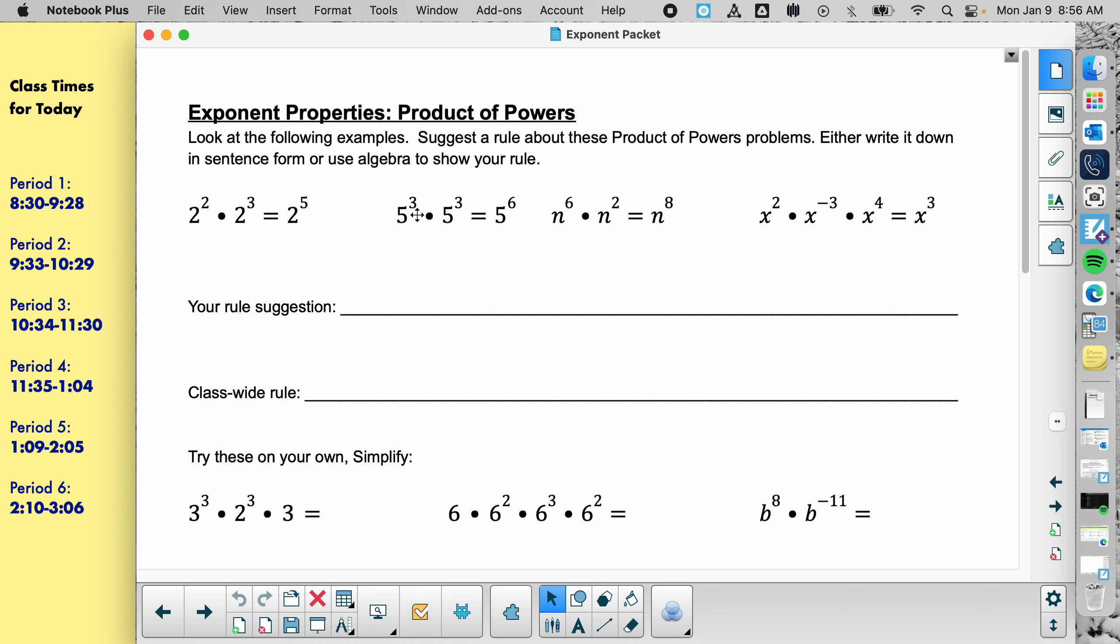My guess is you could possibly figure out what's going on just from the examples up at the top. Who should I call on? Taryn? Let's take a look at the first one there. Two to the second times two to the third equals two to the fifth. In your words, what's going on? Oh, that's good. That's a good addition there. Yeah. So the key thing is that they both have to be the same base.